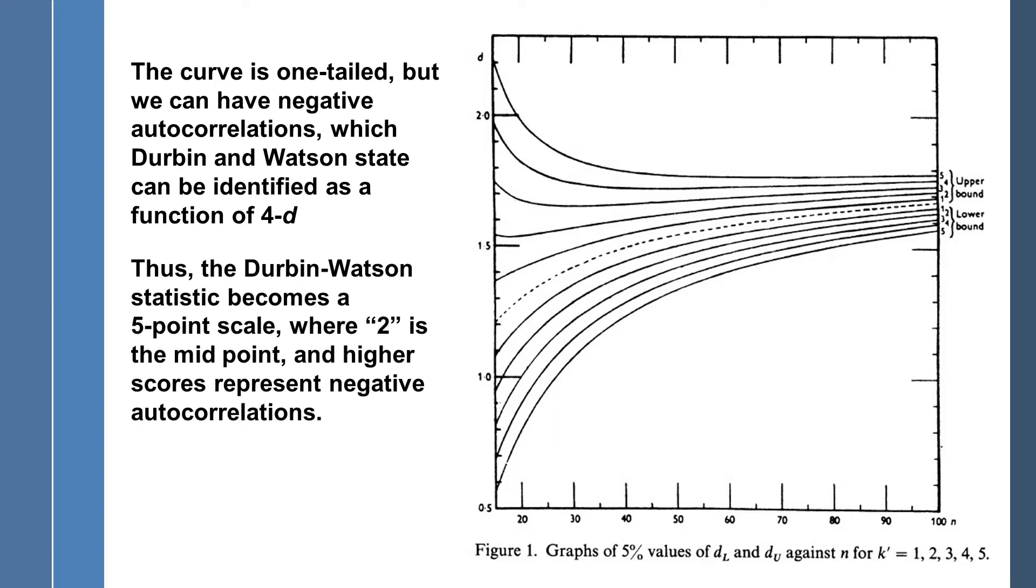Because of the 4 minus D approach that Durbin and Watson used, this statistic essentially becomes a five-point scale, where 2 is the midpoint. Higher scores represent negative autocorrelations, and low scores represent positive autocorrelations. You want your value on the Durbin-Watson statistic to be as close to 2 as possible.